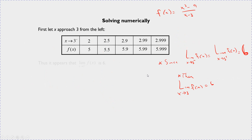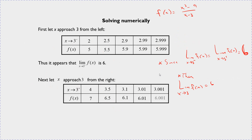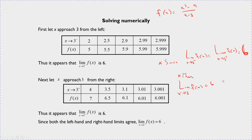So we're going to focus more on the graphical approach. Consider this function: f of x is equal to 1 divided by x minus 2, plus 3. We've got a rational function, and we should be able to graph this from pre-calculus. Let's find each of the following limits if they exist: the limit as x goes to 3, and the limit as x goes to 2.